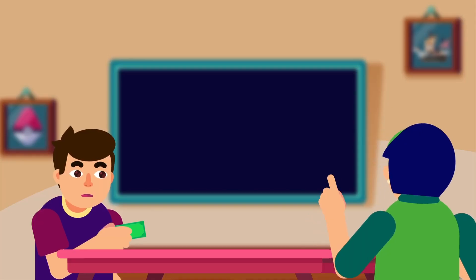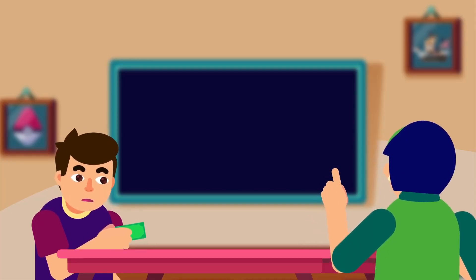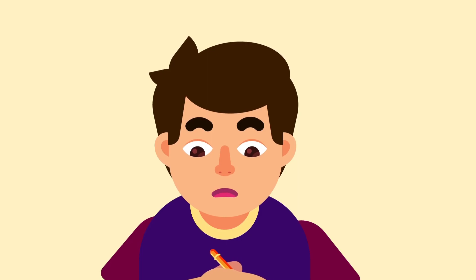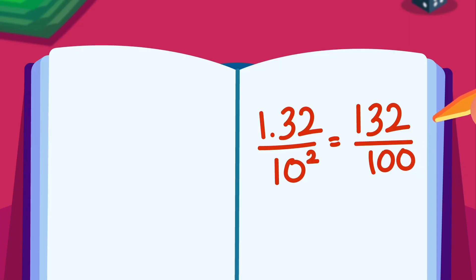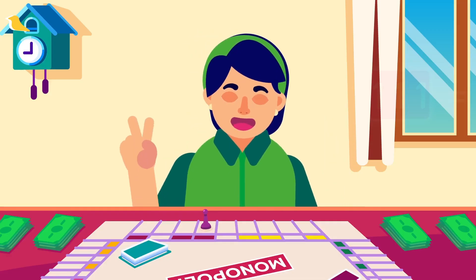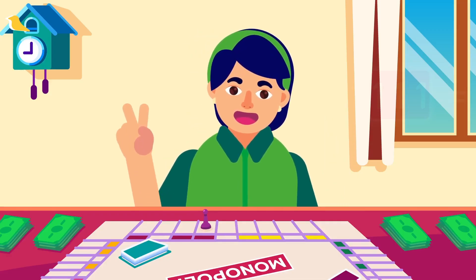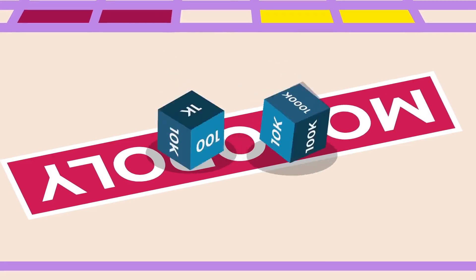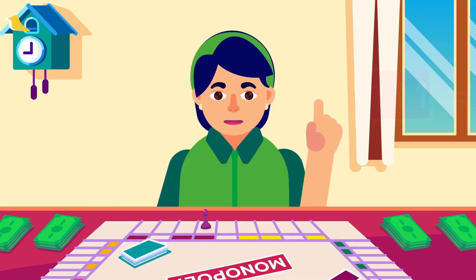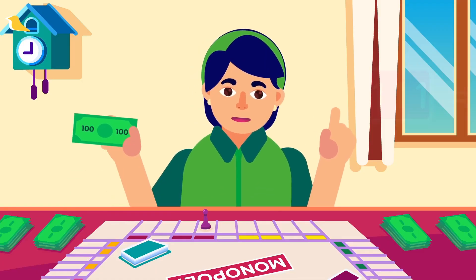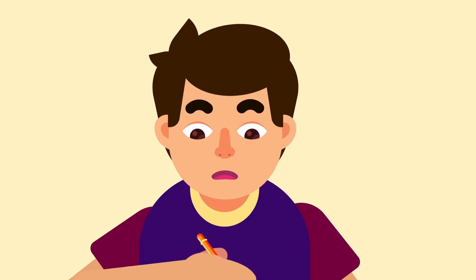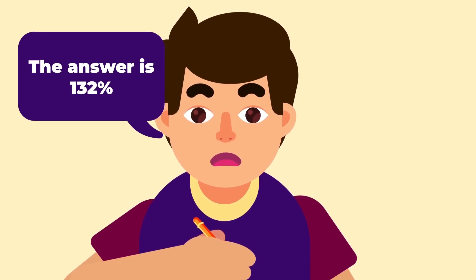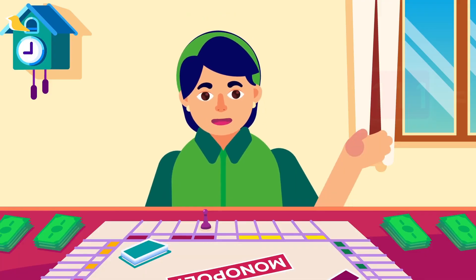We need to convert $1.32 into a fraction first using the previous thumb rule. Then multiply this fraction by 100 and write the answer as a percentage. The answer is 132%.